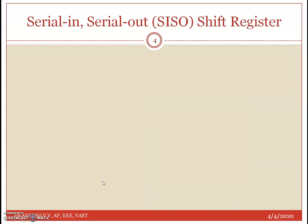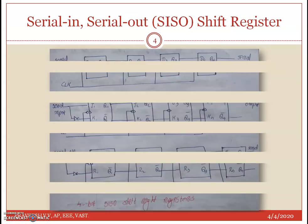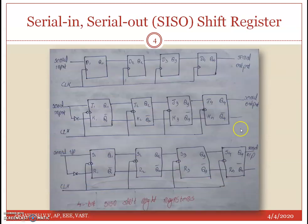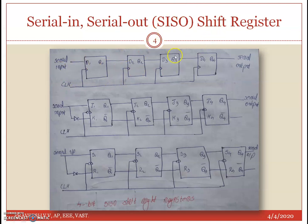We will now look into the details of each type. The first one is serial in serial out. There are different possibilities for the flip-flop type: D flip-flop, JK, SR, and so on — for a 4-bit data transfer. So we consider a 4-bit register for this analysis.